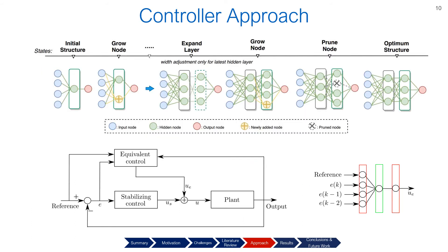This is a summary of the proposed controller, which has a control input U comprising a switching function and the output from the deep neuromorphic controller. Our proposed approach takes four inputs consisting of a reference and error horizon in three steps. The output of the network is the control signal for the dedicated axis.